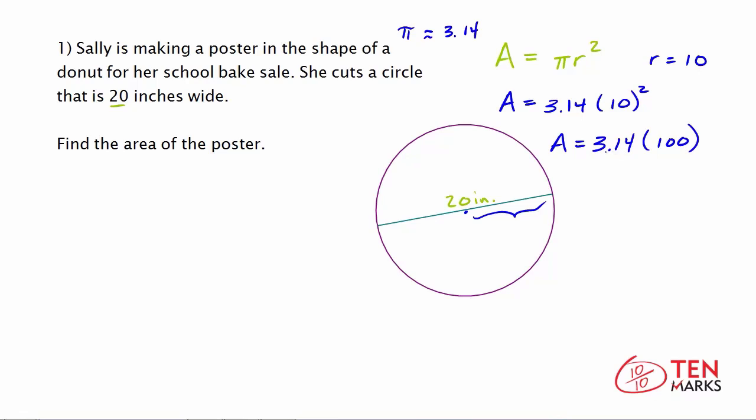When you multiply 3.14 times 100, you get the value for the area, which is 314. Let's use our units here. We're dealing with inches. So the area of this poster is 314 inches squared.